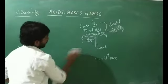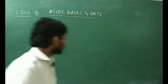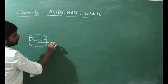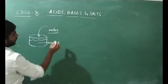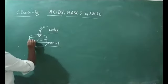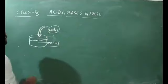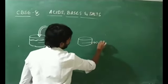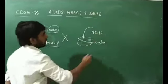Now, how do we perform the dilution of acids, and what precaution must we take? Suppose this container has an acid and we want to add water to it — we should NOT add water to the acid. That method is wrong. The correct method is: we take water first, and then slowly add the acid to the water. This is the correct method.